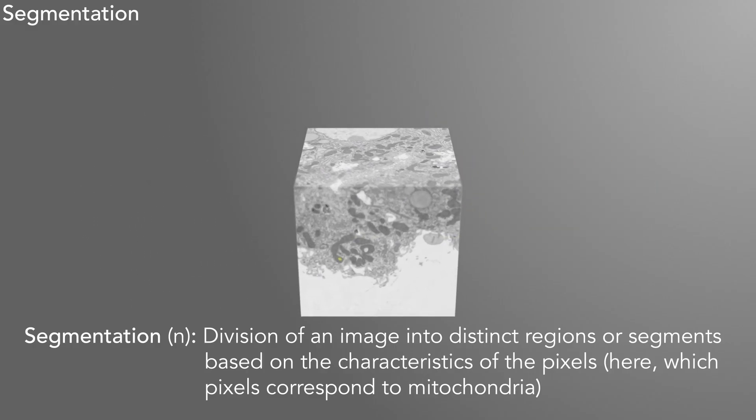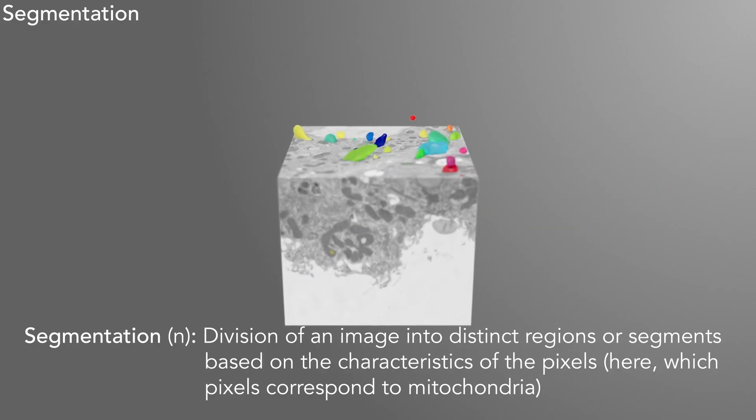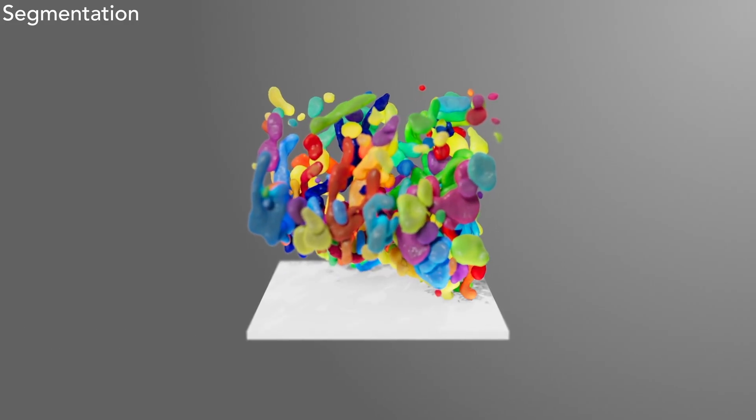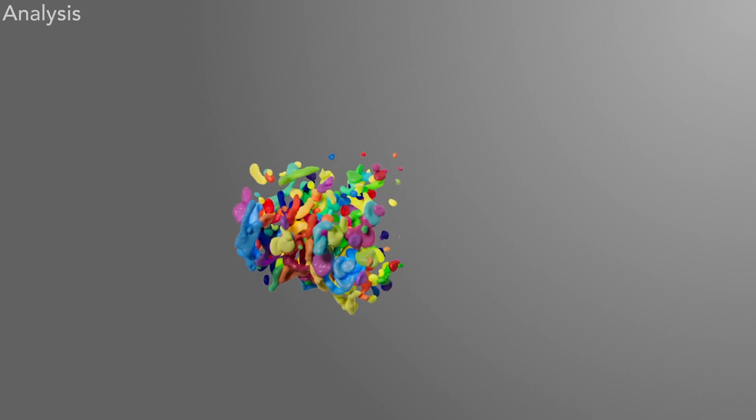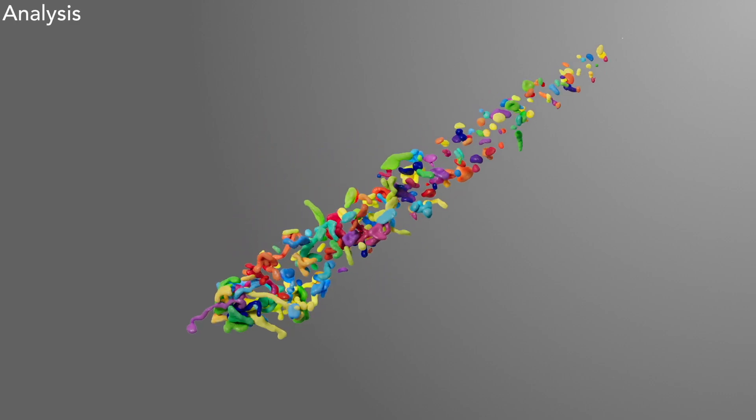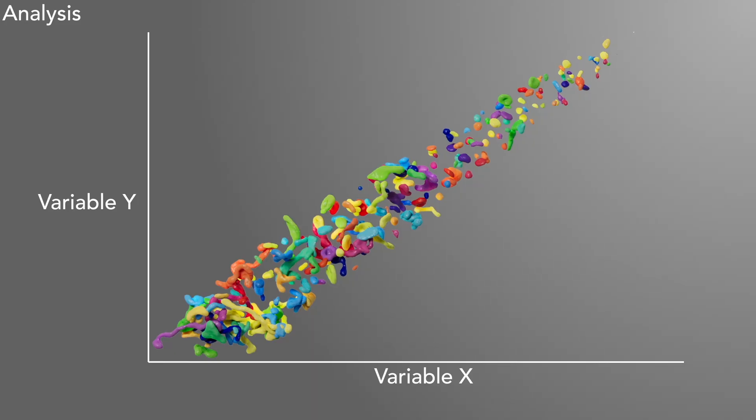These are of course 2D segmentations on a single image, and you can imagine that accurately segmenting all the mitochondria in the entire image volume will generate not only visually informative 3D renderings, but also these individual renderings of mitochondria can then be used for downstream analysis.